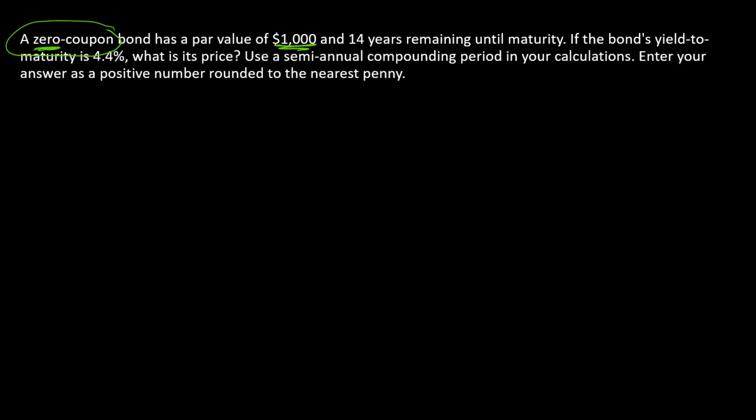So how many years remain until maturity? 14. Now, in our calculations, we need to set a compounding period. And since we're talking about bonds, we typically use semiannual compounding. And so we'll do that with a zero here as well.